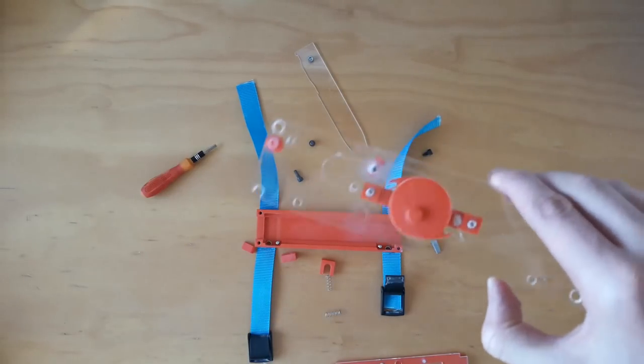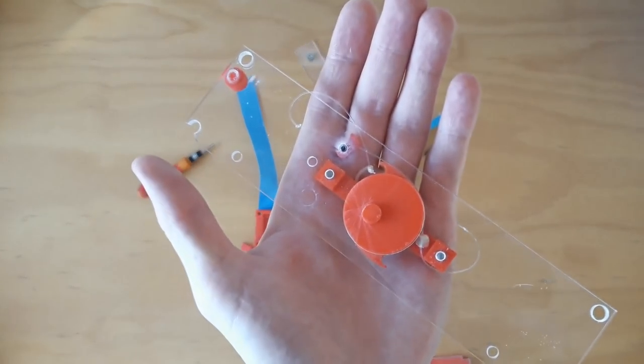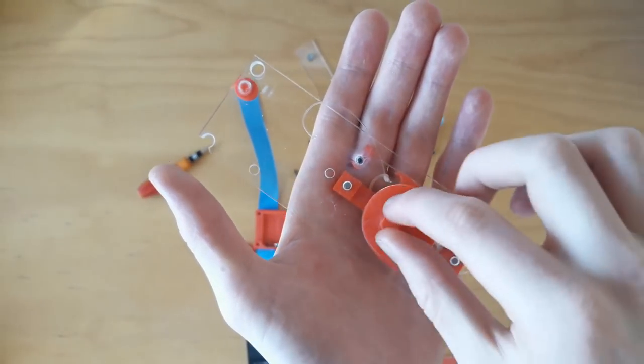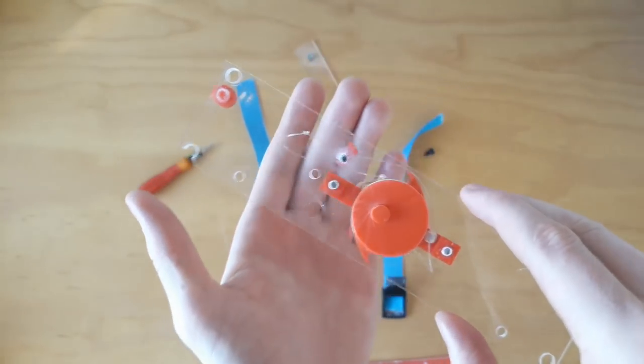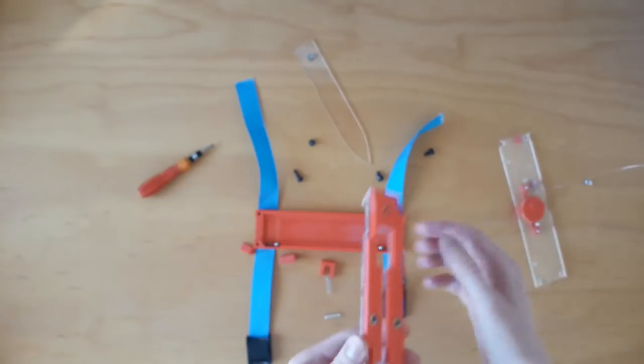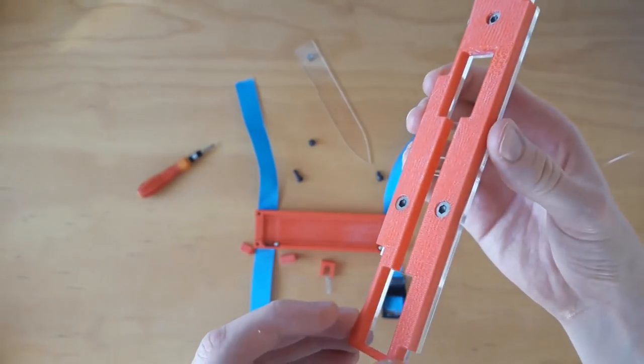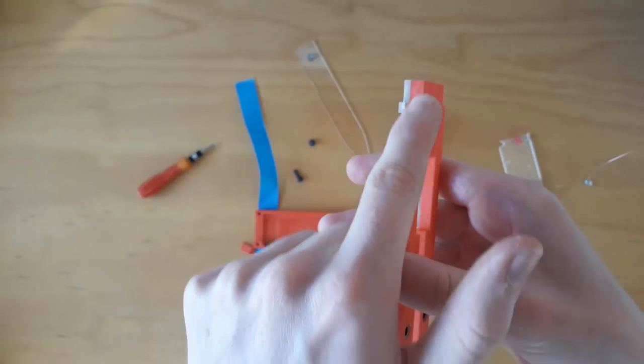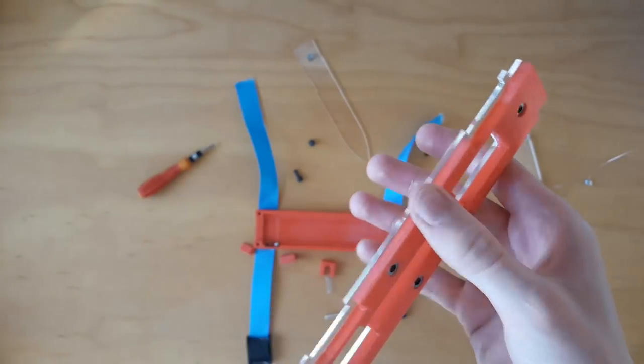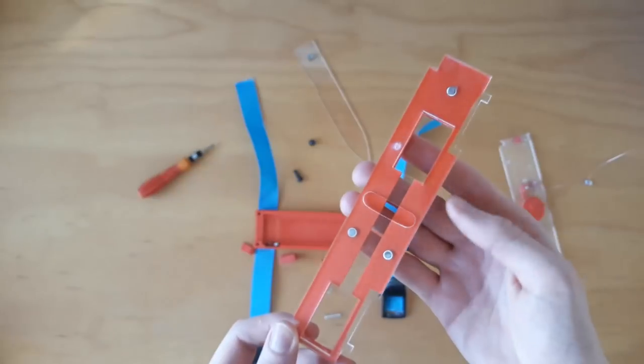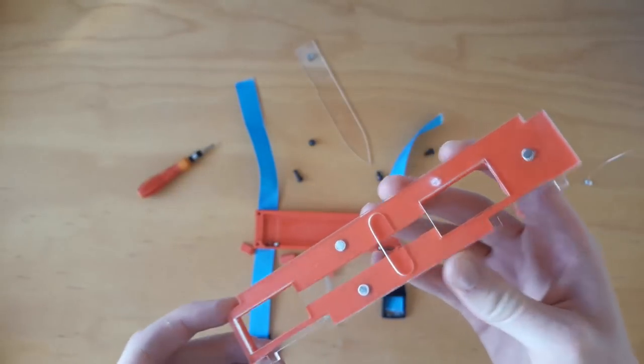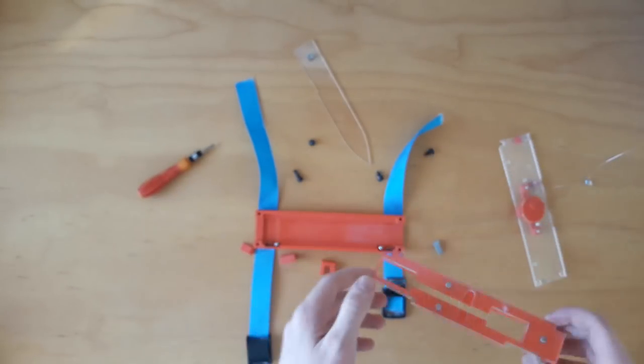And the same thing with this part, you can actually see here. Yeah, so you can see the tool marks here. And the same thing here, actually. On the inside of these parts here. I had to sandpaper that off. Because the tolerances are very, very narrow. It's very hard to get these tolerances just right.